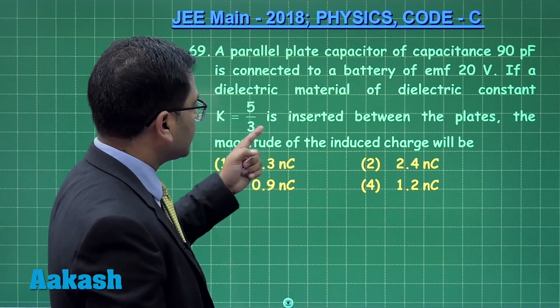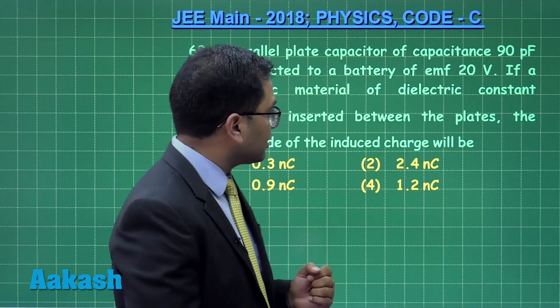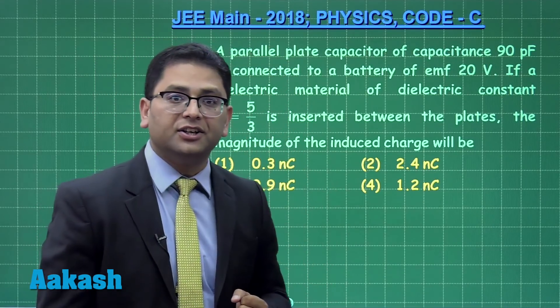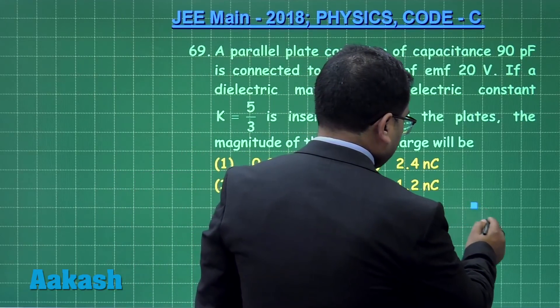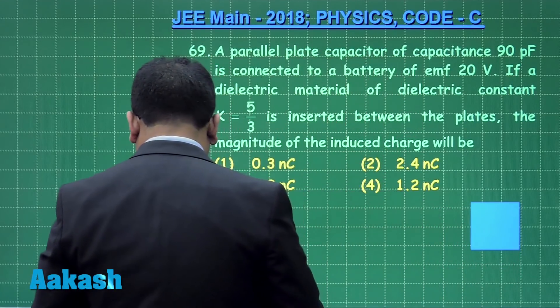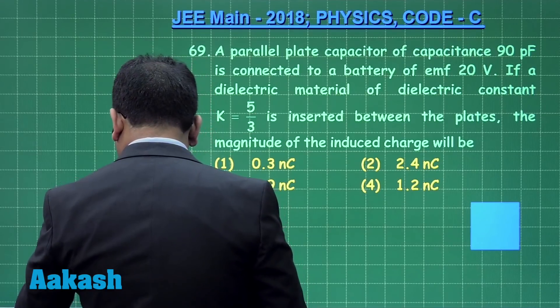The dielectric constant is 5/3 and we need to calculate the magnitude of the induced charge. Let's make a small figure that will help us understand the capacitor.